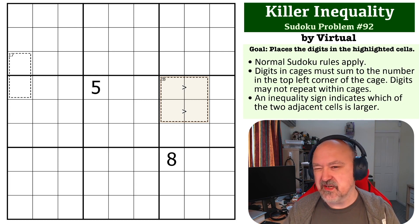Digits cannot repeat within cages, but these ones are all either in the same box or the same column, so that's okay.